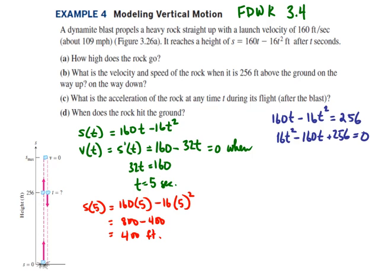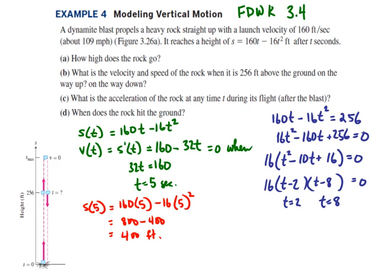We'll factor and set it equal to zero. We factored out a 16, now we'll factor the quadratic, giving us t minus 2 and t minus 8. So at t equals 2 and at t equals 8, the particle is at 256 feet. At t equals 2, it's on its way up to 400, and at t equals 8, the rock is at 256 feet on its way down from 400.